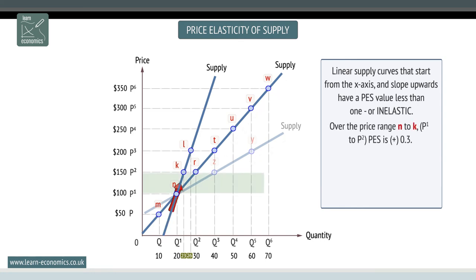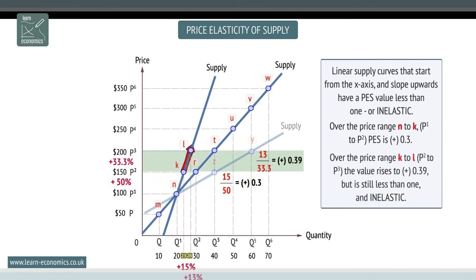Over the price range n-to-k, P1 to P2, PES is plus 0.3. Over the price range k-to-L, P2 to P3, the value rises to plus 0.39, but is still less than 1, and inelastic.